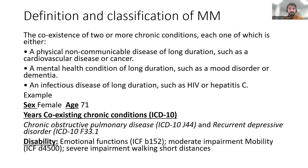As an example, a female aged 71 has chronic COPD and recurrent depressive disorder, with disabilities including moderate impairment of emotional functions and mobility, and severe impairment in walking short distances.